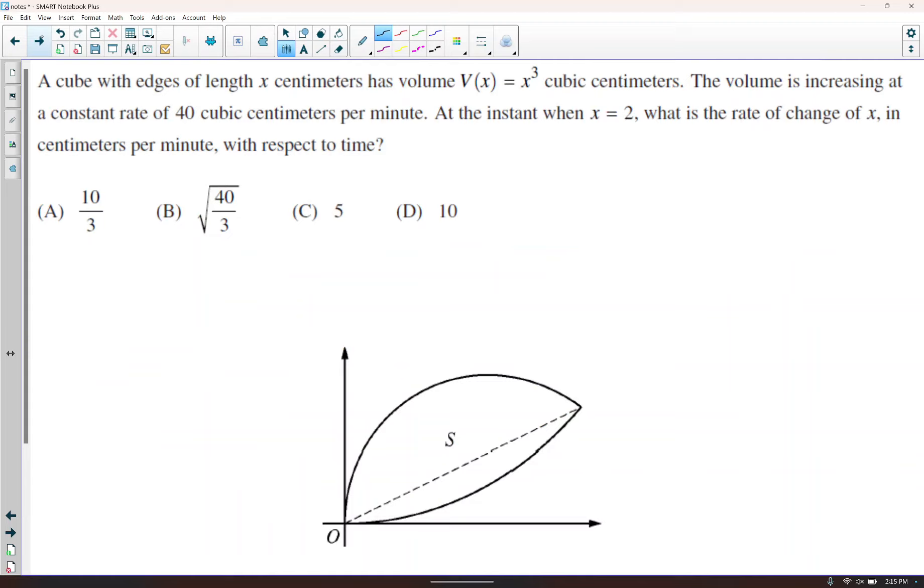A cube with edges of length x centimeters has a volume V of x to the third cubic centimeters. The volume is increasing at a constant rate of 40 cubic centimeters per minute, the volume. So dV/dt is equal to 40. At the instant when x is equal to 2, what is the rate of change of x? So what is dx/dt in centimeters per minute with respect to time? So dV/dt is equal to 3x squared dx/dt. 40 is equal to 3 times 4 times dx/dt. So we need 40 over 12. That's 10 thirds. That's letter A.